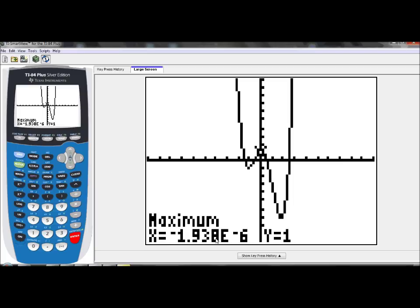You see negative 1.938e to the negative 6 for your x and 1 for your y. This number is 0 for us. This e means times 10 to negative 6 power, scientific notation. And so really this is negative 0.00001938. Your calculator is approximating it. We're going to use 0, 1 for that relative maximum point.